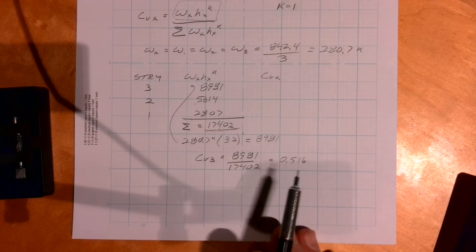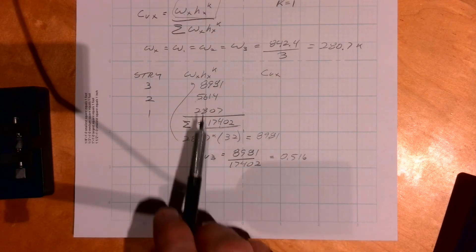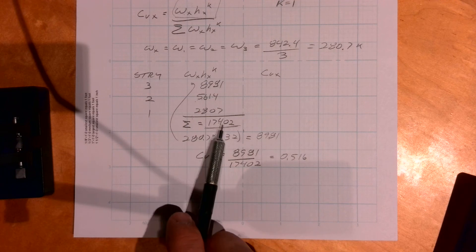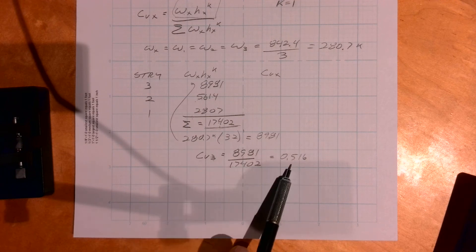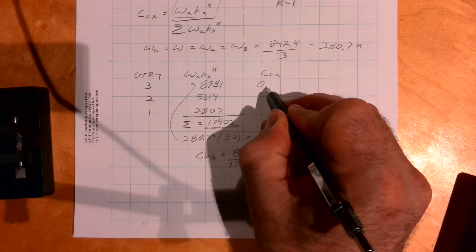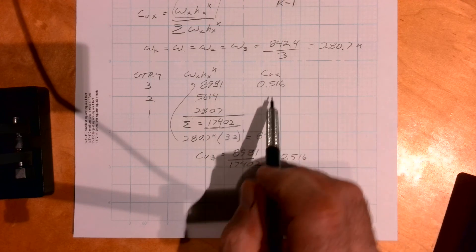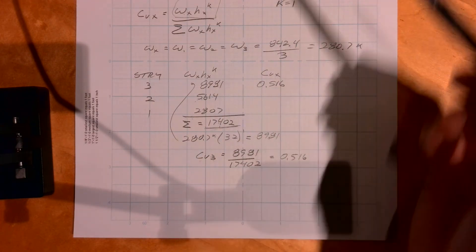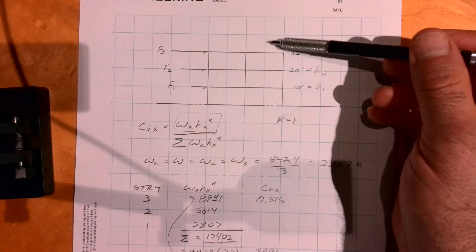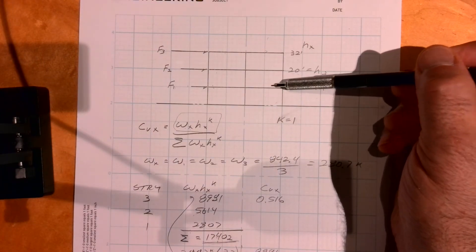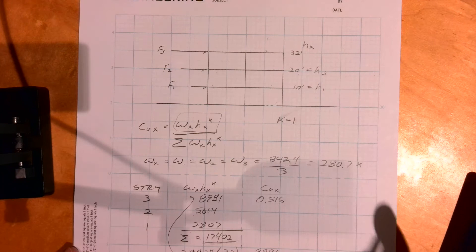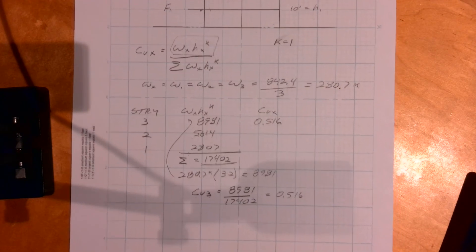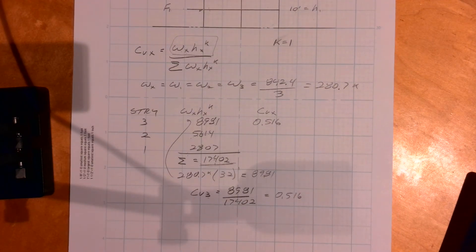Okay, so I went and did this for CV3. So I took that number divided by that number and got 0.516. So what that tells me is 51.6 percent of the base shear acts at the roof, and then the other remaining 50% is going to be split between those two floors. So I'll do those calcs and we'll get back to that.